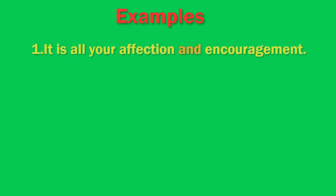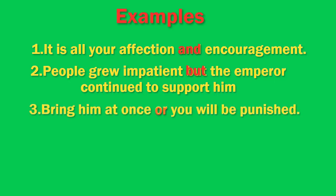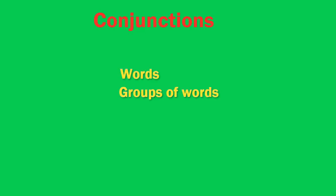Before talking about the conjunctions, let's look at these examples. 'It is all your affection and encouragement.' 'People grew impatient, but the Emperor continued to support him.' 'Bring him at once or you will be punished.' In these sentences, the words in red are used to connect the two sentences. These are called conjunctions. A conjunction connects words or groups of words or short sentences. In other words, a conjunction is a joining word.